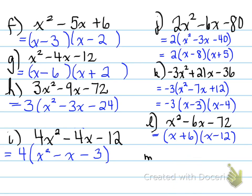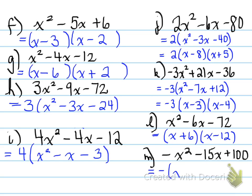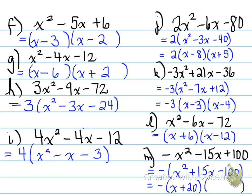m: negative x squared minus 15x plus 100. Very important for simple trinomials — the coefficient of x squared must be 1, not negative 1 like this. It must be positive 1. So how do we get rid of that negative? We pull it out. We pull out a negative and it turns out to be negative 1 times x squared plus 15x minus 100. We need what two numbers multiply to give you negative 100 and add to give you 15. Those numbers are x plus 20 and x minus 5, because 20 times negative 5 gives you negative 100 and 20 plus negative 5 gives you positive 15.